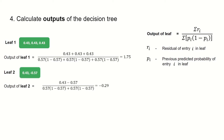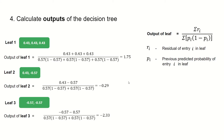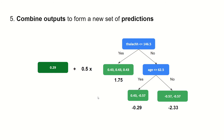For leaf two, we have two residuals: 0.43 and minus 0.57. On the bottom, we have this expression, and the previous predicted probability for all of our residuals is 0.57, so our output for leaf two is minus 0.29. And lastly, for leaf three, applying the formula, we have an output of minus 2.33. So now we can combine our initial leaf with our decision tree.